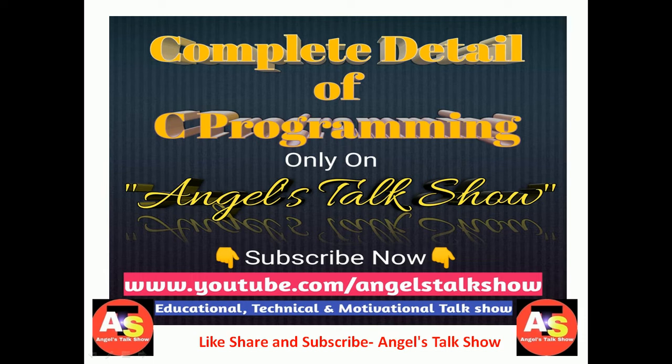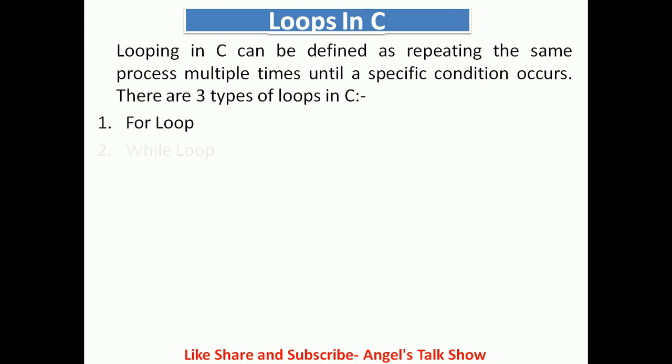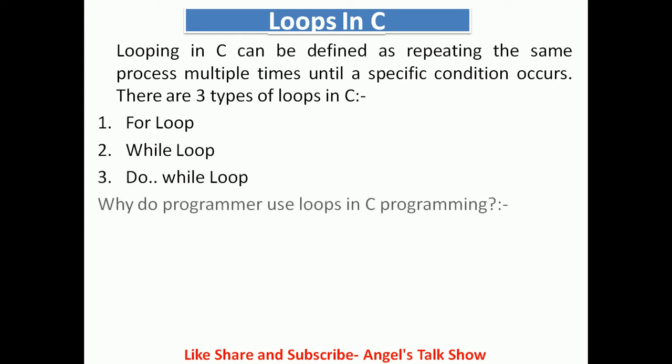Now let's start our video and discuss loops. In this first slide we will discuss the definition of loops. Looping in C can be defined as repeating the same process multiple times until a specific condition occurs. We have three types of loops in C programming language: the first is the for loop, the second is the while loop, and the third is the do-while loop.